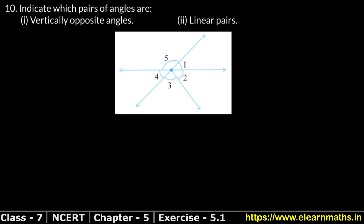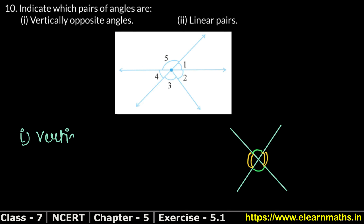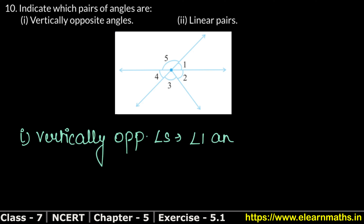Let's do question number 10 of exercise 5.1, that is lines and angles. Question number 10 asks us to indicate which pair of angles are vertically opposite angles. If we have two intersecting lines, then angle 1 and angle 4 are vertically opposite. In the first part, angle 1 and angle 4 are vertically opposite angles.